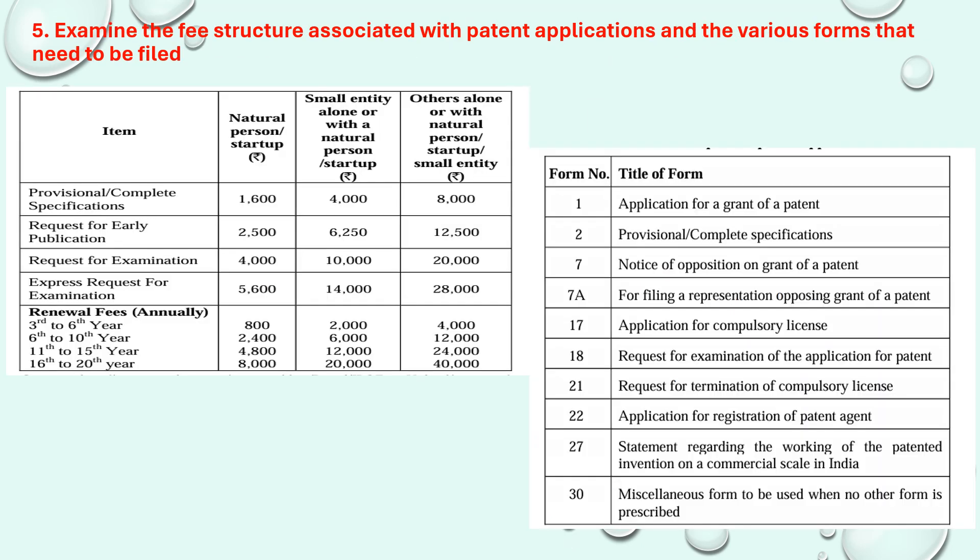Moving on to the next question: examine the fee structure associated with patent applications and the various forms that need to be filed. The various forms are: Form 1, 2, 7, 8, 17 through 30. These different forms must be filled to ensure that a patent is granted. Different fee structures are available for provisional and complete specification, and for the request for examination in the complete patenting process.